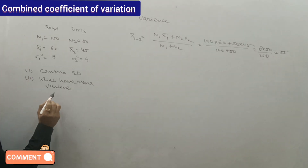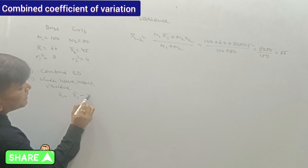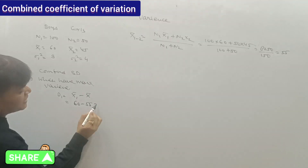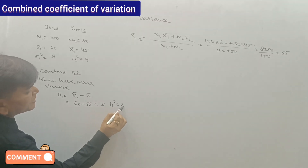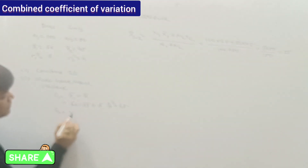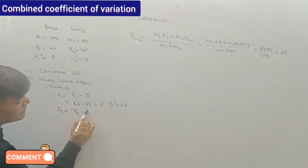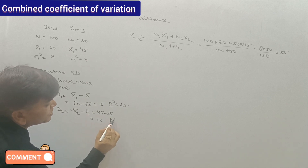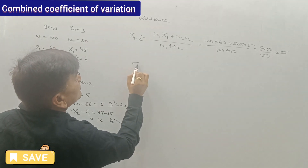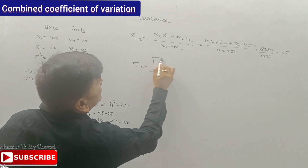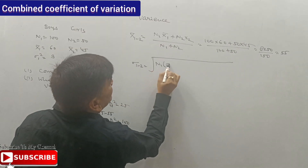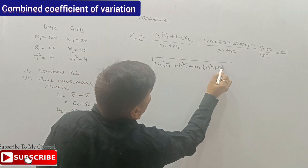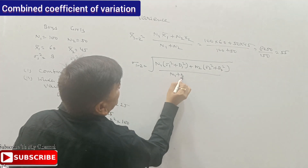Now we calculate d1 and d2. d1 = x̄1 minus the combined arithmetic mean = 60 − 55 = 5, so d1² = 25. d2 = x̄2 minus the combined arithmetic mean = 45 − 55 = −10, so d2² = 100.